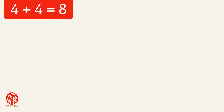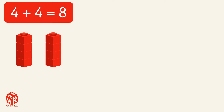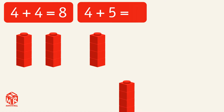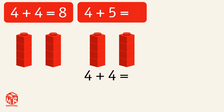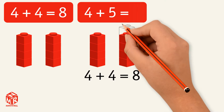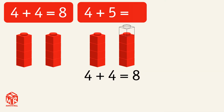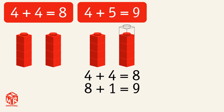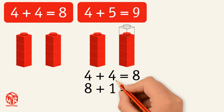We have the doubles fact 4 plus 4 equals 8. We can use this doubles fact to do 4 plus 5. We know that 4 plus 4 equals 8, but we need 4 plus 5, which is one more. This gives us 8 plus 1 equals 9, so 4 plus 5 equals 9. This is the doubles plus 1 strategy.